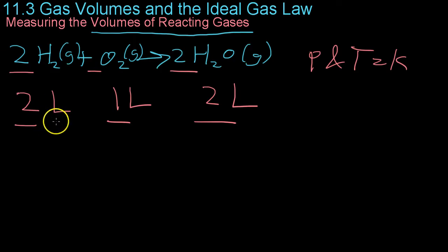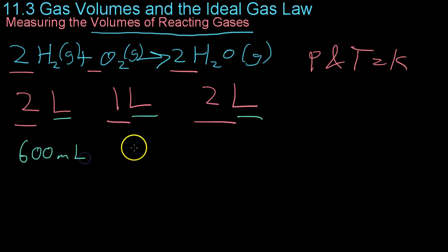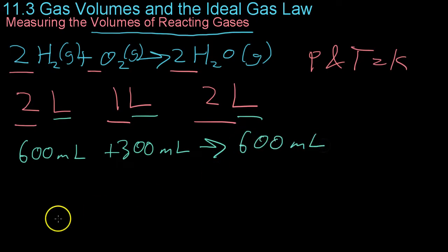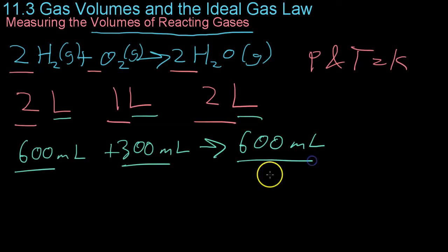This law applies to all measurements of volume. For example, if you had 600 milliliters of hydrogen gas combined with 300 milliliters of oxygen, you would yield exactly 600 milliliters of water. It's the ratio that's important, not the actual number or unit of measurement.